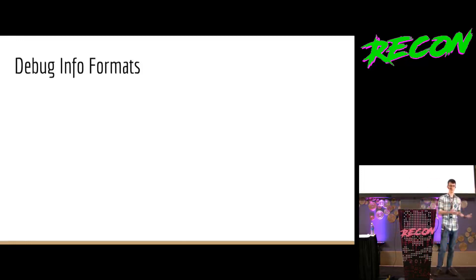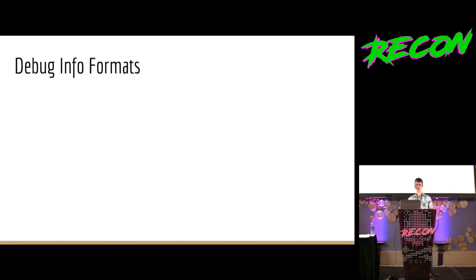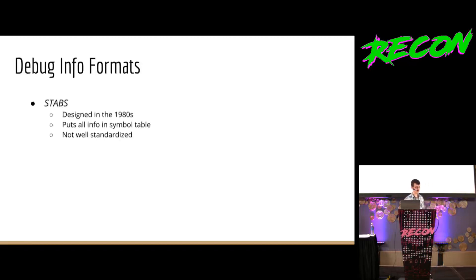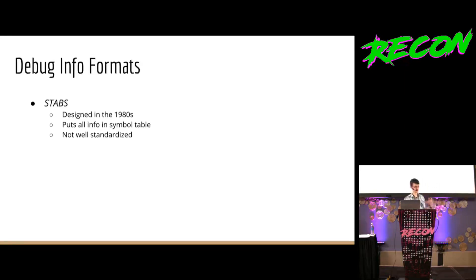When I talk about exporting info from IDA, there's got to be some kind of format for that — one that's widely understood and used by a variety of tools to make this actually helpful. I could just dump everything to text, but nothing would understand it, so what would be the point? There are a few options. Stabs is one that was fairly widely used and still is to some degree, but it's super old — it sticks everything in the symbol table, giving you these big crazy strings. While technically standardized, everyone's got their own weird forks and extensions.